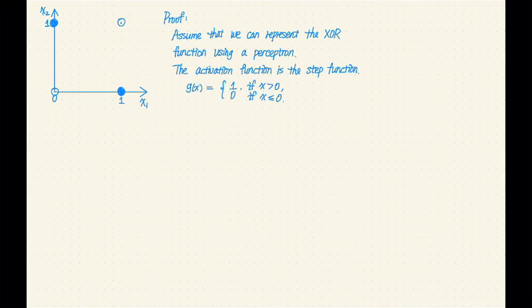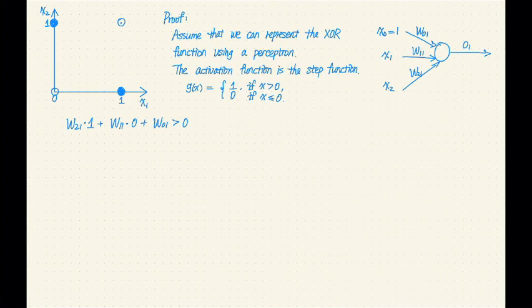For example, the example (1, 0) is a positive example. That means if we plug in X1 equals 1 and X2 equals 0, the weighted sum should be positive. I've written the first inequality, but I realized that I should probably remind you what the perceptron looks like, so I've drawn a little picture of the perceptron as well. So the first inequality says, if we plug in 1 and 0, the weighted sum should be positive.